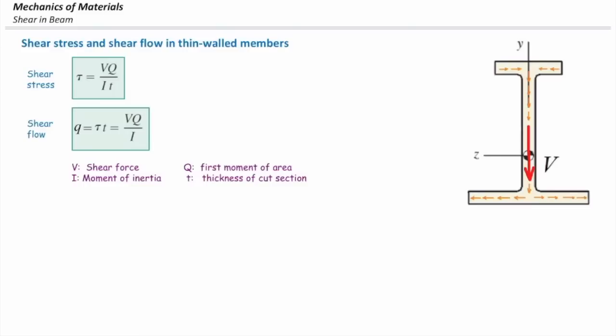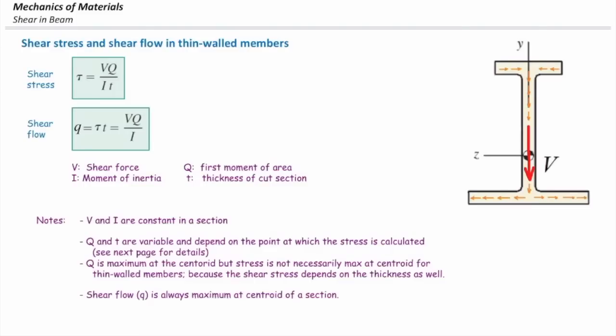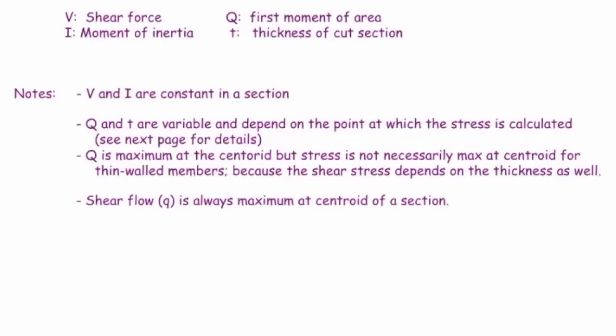There are some important facts about shear stress and shear flow. First, in calculation of shear stress, V and I are constant across a section. Shear force is determined for one section — it doesn't matter what point you are determining shear stress at. It is variable across the length of the beam, but it is constant within one section. Similarly, moment of inertia is determined for the entire section, not for a certain point.